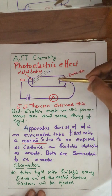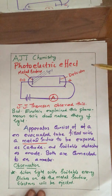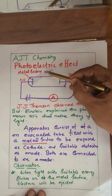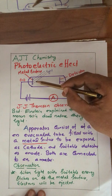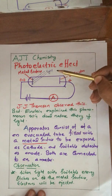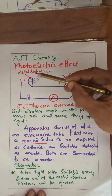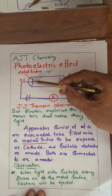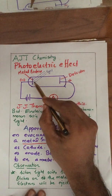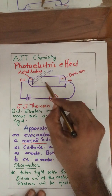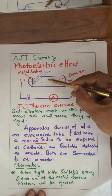Definitely an electric circuit is completed, and there is a deflection in the ammeter. This phenomenon — the ejection of electrons from the surface of certain metals when light with a minimum frequency is applied on a metal surface — is known as the photoelectric effect. The emitted electrons are known as photoelectrons.